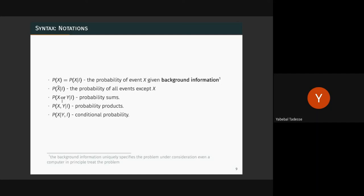The syntax of probability is defined by just a few rules. The probability of X — where X is a random variable — must always be understood with respect to certain background information: the world that you know. For example, the probability of the height of a grade 3 student assumes background information such as their age range.